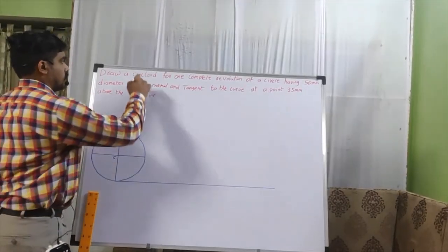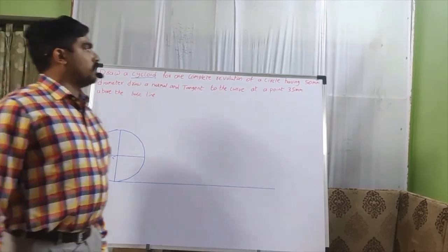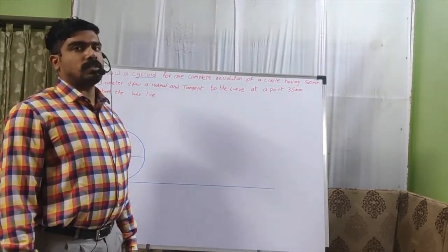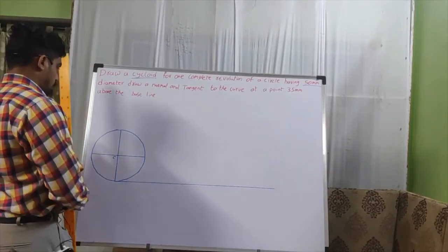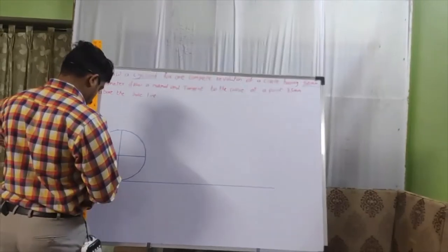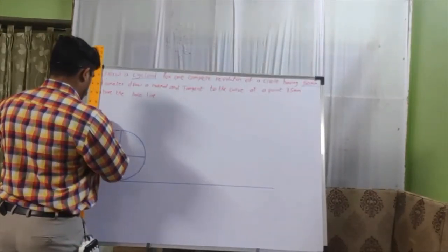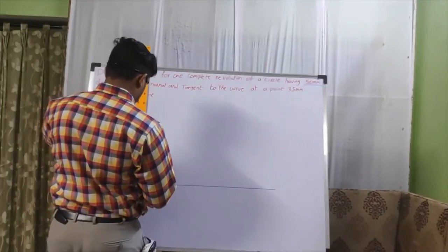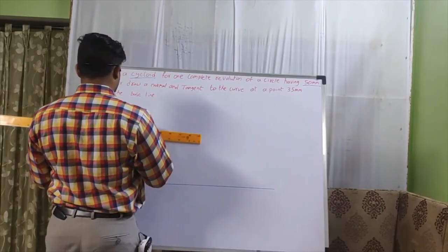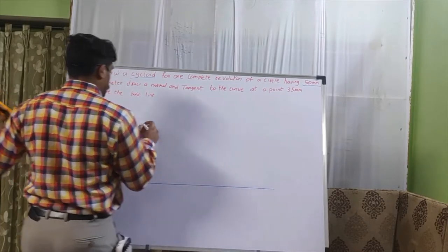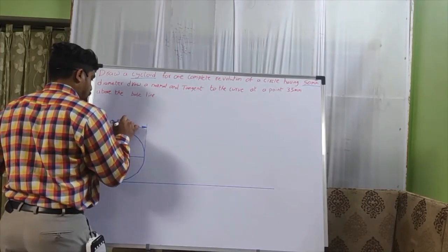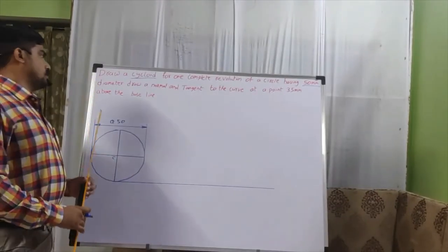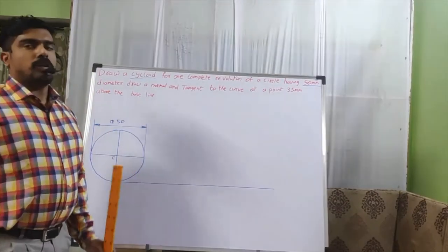The question says: draw a cycloid for one complete revolution of the circle. The circle has a dimension of 50 mm diameter. I have drawn the circle with a 50 mm dimension — the diameter is 50 mm. Next, we need to draw the normal and tangent to the curve.